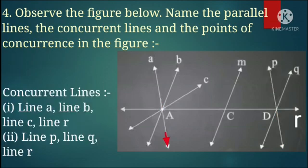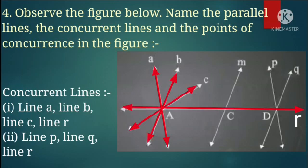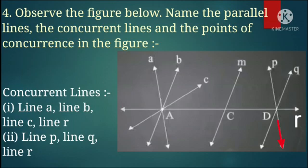Concurrent lines: Line A, Line B, Line C, Line R are concurrent lines. Second, Line P, Line Q, Line R are concurrent lines.